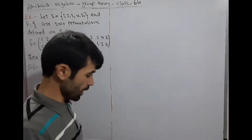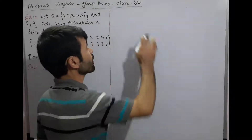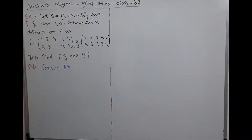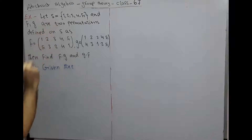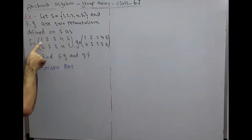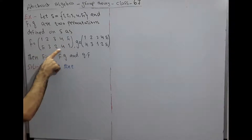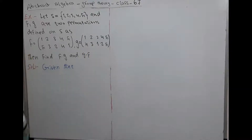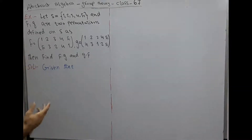Hello friend, welcome to the abstract algebra class. This is class 67. In this class we want to solve an example of permutation group — specifically multiplication of two permutation groups. Here is an example: let S equal to {1, 2, 3, 4, 5} and f, g are two permutations defined on S. f equals (1 2 3 4 5 / 5 3 2 4 1), g equals (1 2 3 4 5 / 4 3 1 2 5). Then find f∘g and g∘f.